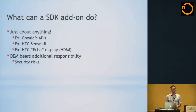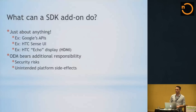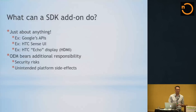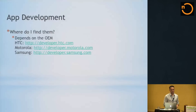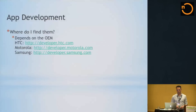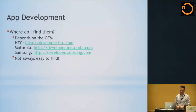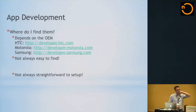The OEM bears extra responsibility when creating these things. There are security risks - are you writing secure code? This is going into every one of those millions of devices you're going to sell. You could have unintended platform side effects if you change the underlying implementation, and you could have unintended app side effects. From an app development perspective, where do you find these things? It really depends on the OEM. Each OEM provides a different location to download SDK add-ons, usually via a URL you can drop into the SDK manager. They're not always easy to find, and they're not always straightforward to set up.